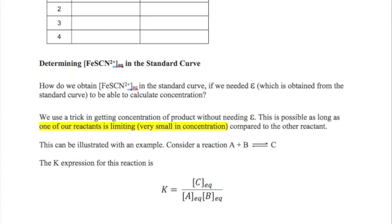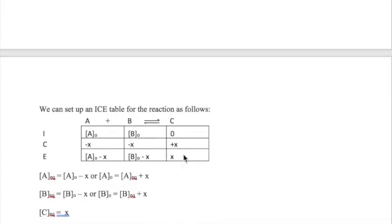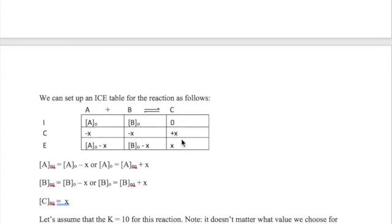The reason is because the standard solutions have different recipes compared to the test solutions. In the standard solutions, one of the reactants has a much smaller concentration than the other. Why does this matter? Let me illustrate this with an example. Let's say I have a reaction A plus B goes to C. The K expression will be C at equilibrium over A times B at equilibrium.